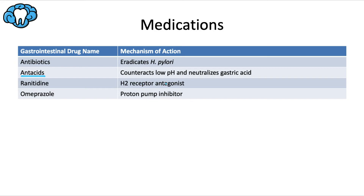Ranitidine is a histamine-2 or H2 receptor blocker, or antagonist. This medication is selective for the parietal cells in the stomach, stopping them from responding to histamine and therefore stopping them from secreting so much acid. It's over the counter, inexpensive, and doesn't have very many drug interactions to worry about.